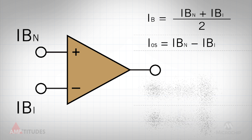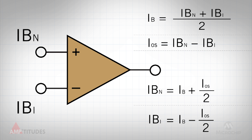Now let's rearrange these two equations in terms of the actual currents at the op-amp inputs. With traditional operational amplifier input structures, the inputs are closely matched in terms of bias current, so the offset is typically very small and hence can be ignored in most cases. However, for more complex architectures, this is not always the case.